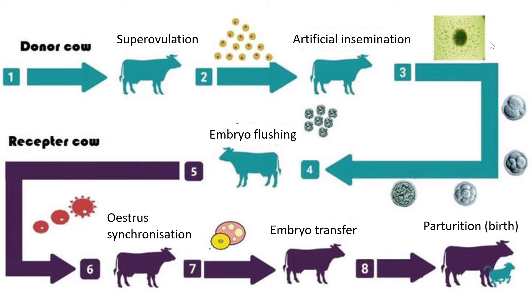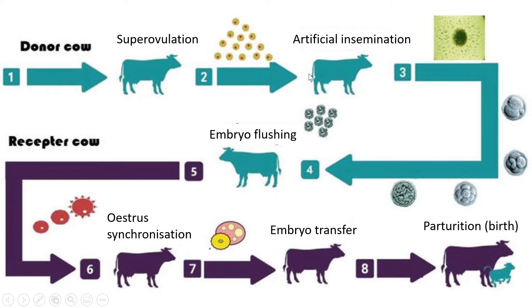Here's a picture showing what happens. First, we start with the donor cow at number one — the genetically superior one — which is treated with hormones so that she can super ovulate. Number two shows all the follicles produced. With special hormonal treatment, more than two Graafian follicles can develop, so more than one per ovary can develop. Then, if natural mating is not used, this donor cow is artificially inseminated with sperm to fertilize the egg cells. Number three shows the young zygote developing with cells forming.